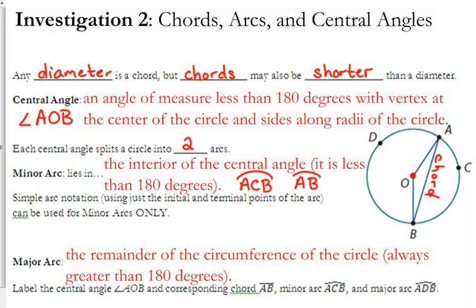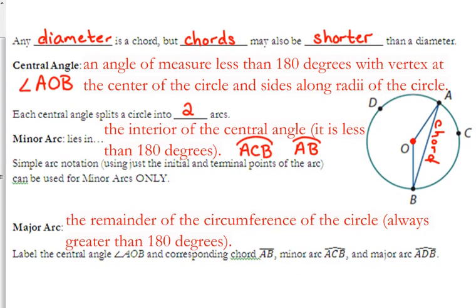And then the major arc is the remainder of the circumference of the circle, and it's always greater than 180 degrees. So the major arc created by that central angle would be arc ADB. The major arc is this side over here.